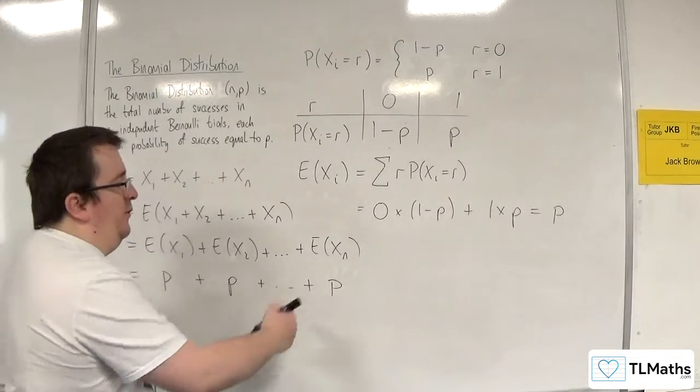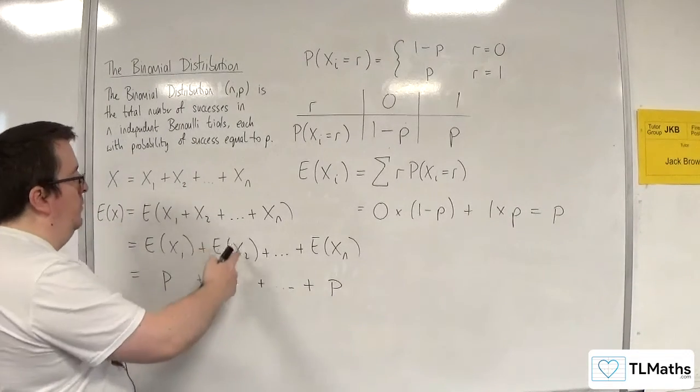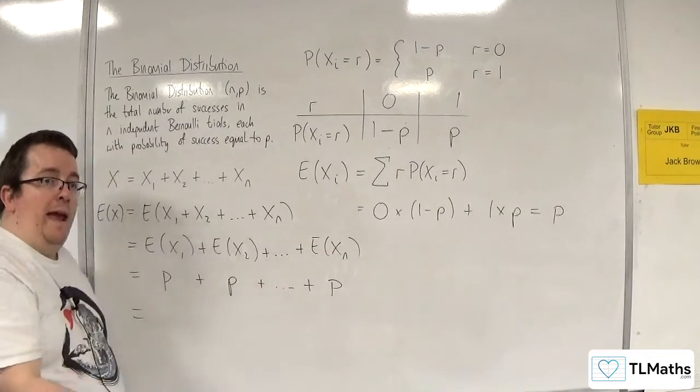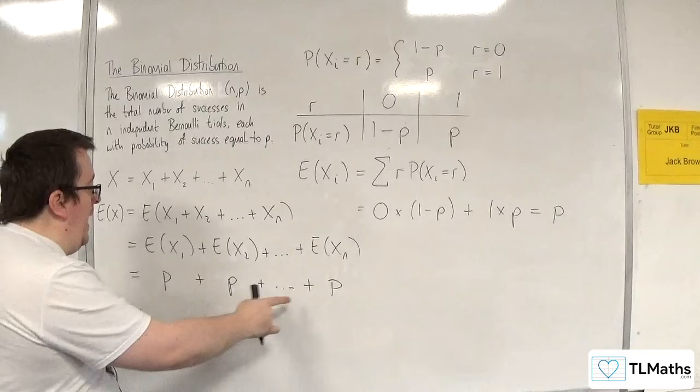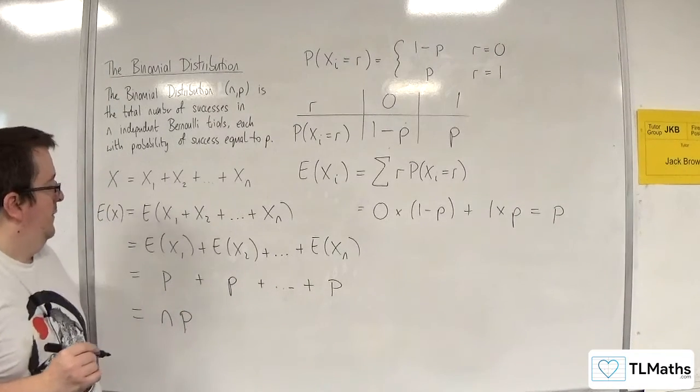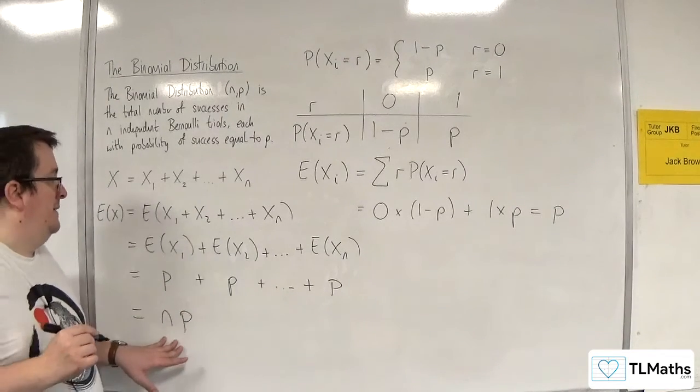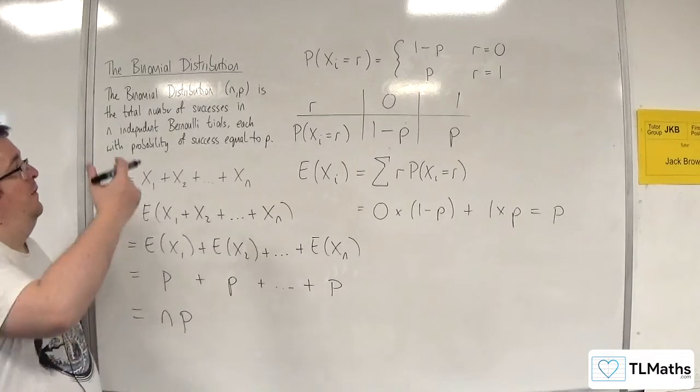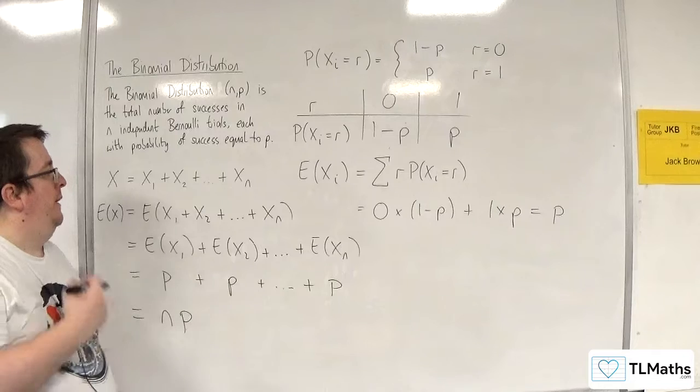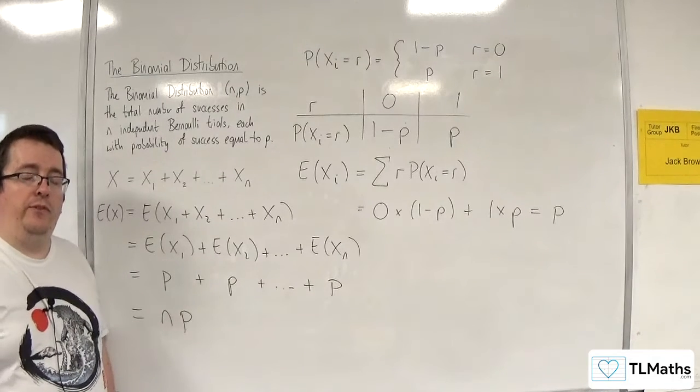Now, how many of these do I actually have? Well, all the way up to N, so there are N of them. So you've got N lots of P. And so that is the expected value of the binomial distribution with N number of independent trials and P the probability of success.